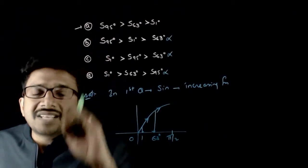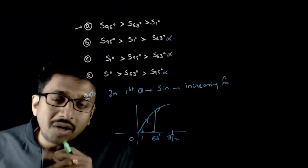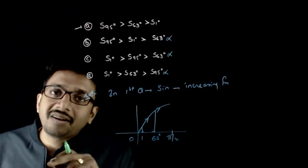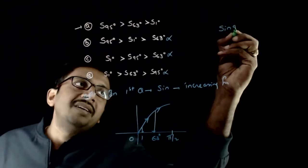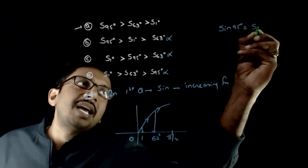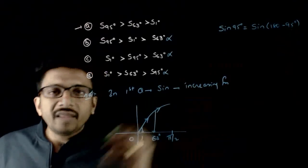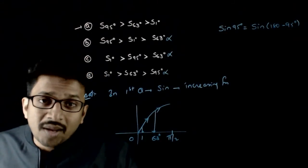But we will also look for sin 95. What is the value of sin 95? Let me bring this sin 95 to the first quadrant. So sin 95 degrees, is it equal to sin of 180 minus 95 degrees? Because sin theta is same as sin of 180 minus theta.